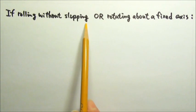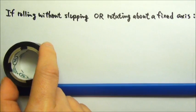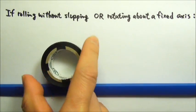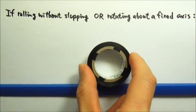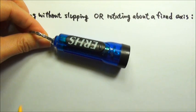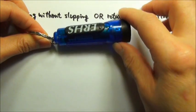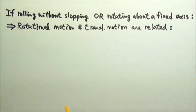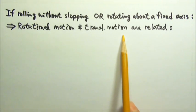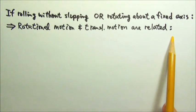If an object is rolling without slipping, like this, or rotating about a fixed axis, like this, then the object's rotational motion and translational motion of certain points on the object are related in certain ways.